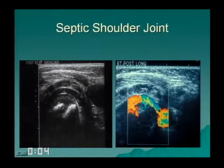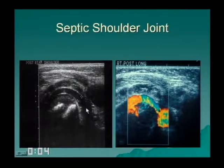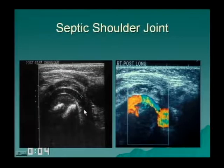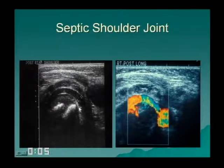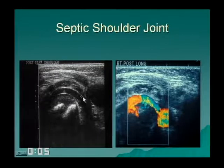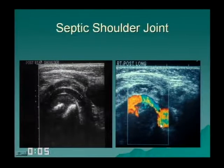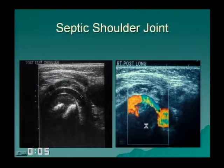In the shoulder joint, accumulation of fluid is different — it is mostly posterior and medial. Fluid accumulates where the synovium is least resistant, which is posterior and medial here. Moving the shoulder slightly will cause fluid to shift, providing a color Doppler echo that confirms you are looking at fluid.